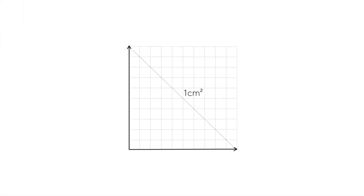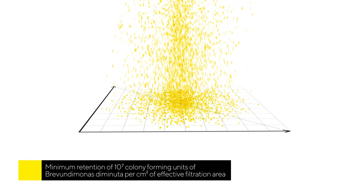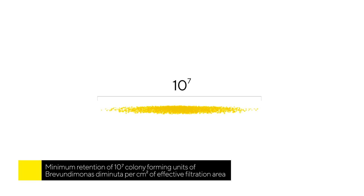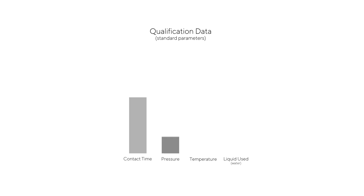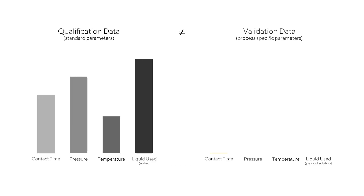Sterilising grade filters have to retain a minimum of 10 to the 7 colony-forming units of Brevundimonas diminuta per square centimetre of effective filtration area. Qualification data determined under standard conditions is not sufficient to guarantee sterilising grade in production. Consequently, regulatory bodies demand validation data determined by a process-specific bacteria challenge test.